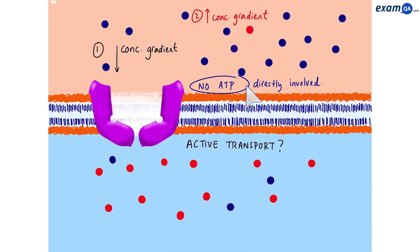So if we didn't use ATP energy, does this count as active transport? The answer is yes, because ATP was used somewhere in the cell to create this concentration gradient for the blue dots in the first place.